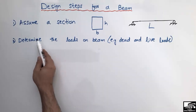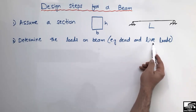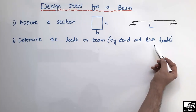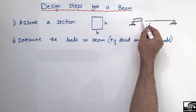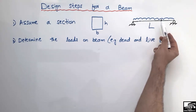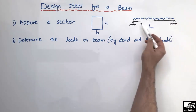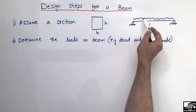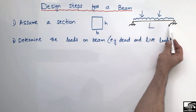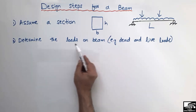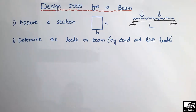The second step is to determine the loads on your beam — that is, dead load and live load. You should take all the loads coming on your beam into consideration. For example, there may be a uniformly distributed load from your slab acting on this beam, or loads from a secondary beam or masonry wall. It may also be a concentrated load or a point load. The second step is about the consideration of all types of loads coming on your beam.